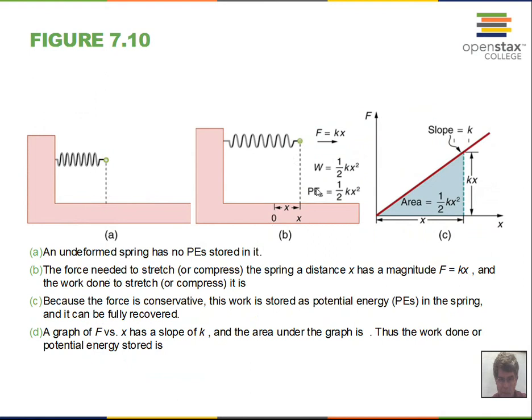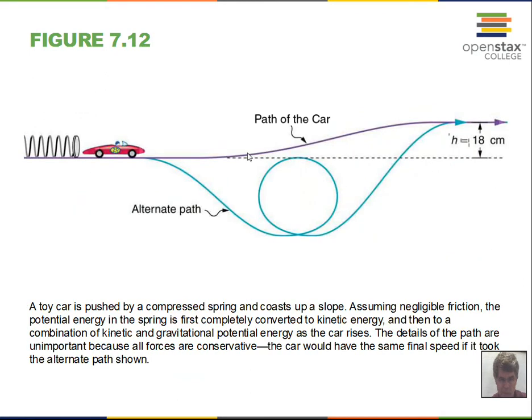Here's a demo: a spring-driven car with two paths — a purple path and a blue path. Which path will the car reach the end first? The car will have the same speed on both paths at the end if we ignore friction. But the bottom path gets there first because the velocity is much higher along that lower path, so it reaches the right side first.